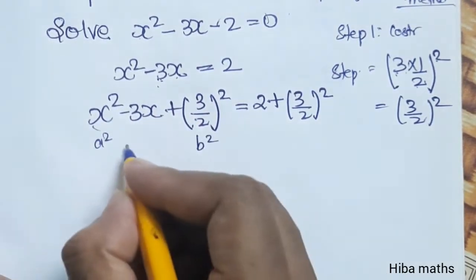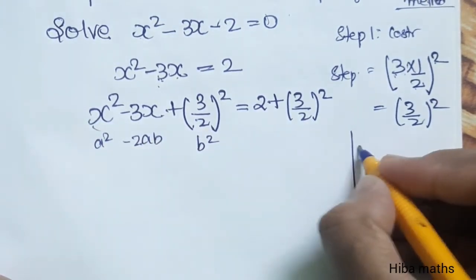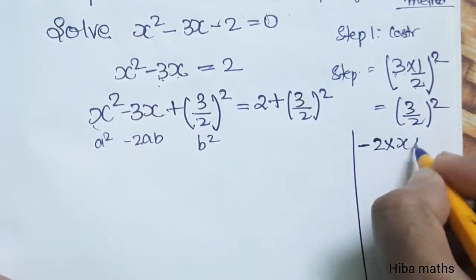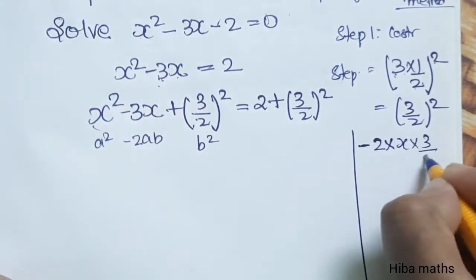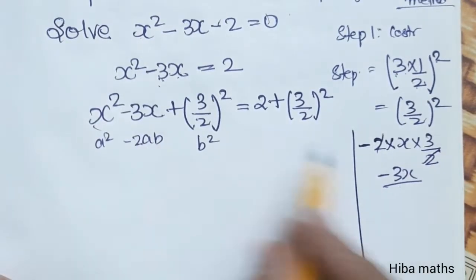This is b². This is the second part minus 2ab. This is the side of x. Minus 2 into x times 3/2. So we move 2 to the other side and add it, plus 2 plus (3/2)².